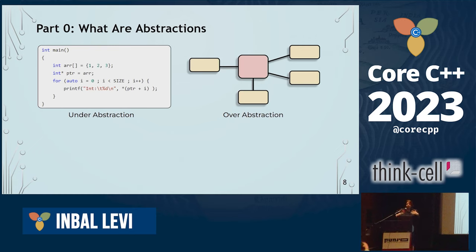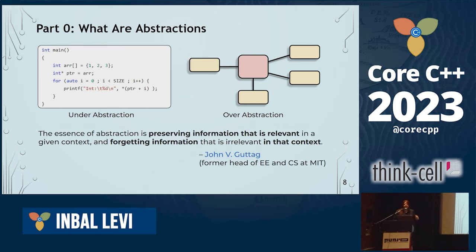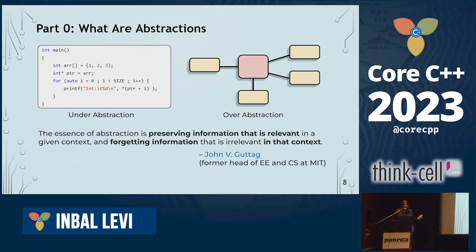I think we very often miss the point that abstraction is not just about generalizing, but it's generalizing to the right level. This is a quote from the former head of electrical engineering and computer science at MIT: 'The essence of abstraction is preserving information that is relevant in a given context and forgetting information that is irrelevant in that context.' I think that's the key to good programming.